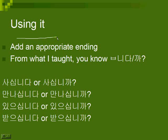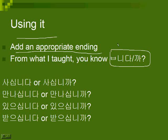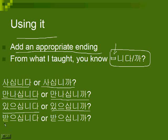Now, using it — add the appropriate ending afterwards. This is called the honorific base. It can't be used on its own. From what I've taught, you have a verb ending to use, which is ㅂ니다 or ㅂ니까. Because the honorific base already ends in a vowel, you can only use ㅂ니다/ㅂ니까 — you can't use 습니다 in this form. So 사다 turns into 사십니다 or 사십니까. 만나다 becomes 만나십니다 or 만나십니까. 있다 becomes 있으십니다 and 있으십니까. 받다 becomes 받으십니다 or 받으십니까.